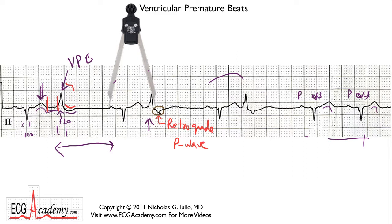The retrograde P wave landed right around the same point where the normal sinus P wave would have occurred. Following that, there is a compensatory pause. Looking at another beat, you also see a retrograde P wave following this ventricular premature contraction. So this is something you'll see again and again: an early beat with no P wave in front of it, followed by a retrograde P wave in many cases — though not always.